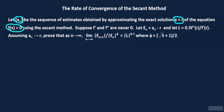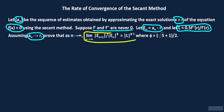Suppose that f is differentiable up to arbitrary order with both f prime and f double prime never equaling 0. Let e sub n be equal to a sub n minus r, and let l be equal to 0.5 times f double prime of r divided by f prime of r. Under the assumption that the sequence a sub n converges to r, we are going to prove that the limit of the absolute value of e sub n plus 1 divided by the absolute value of e sub n raised to the phi power equals the absolute value of l raised to the phi minus 1th power, where phi is the golden ratio, the quantity the square root of 5 plus 1 divided by 2.